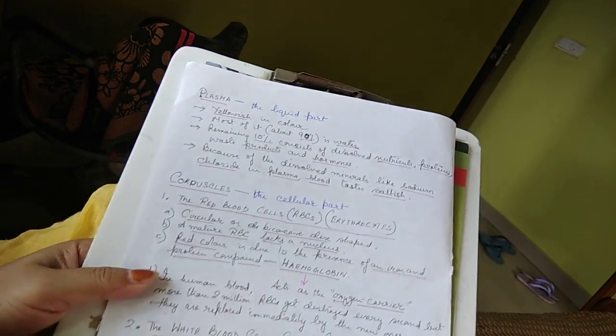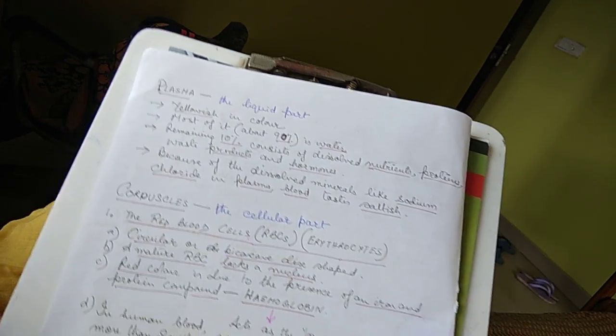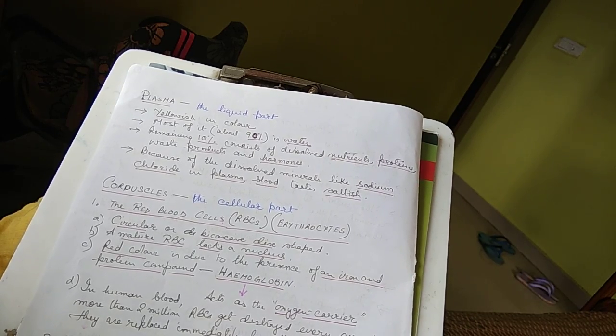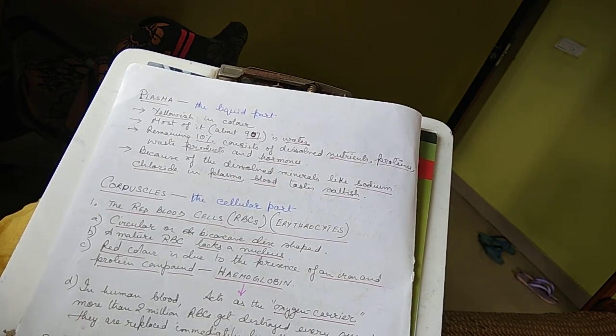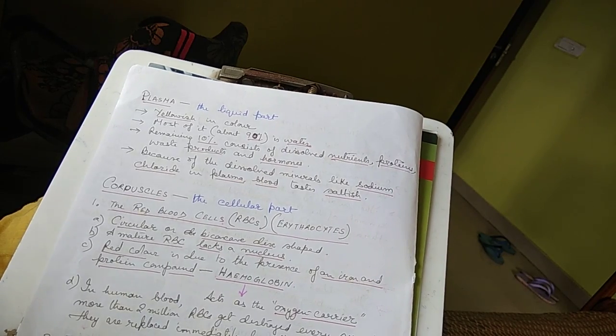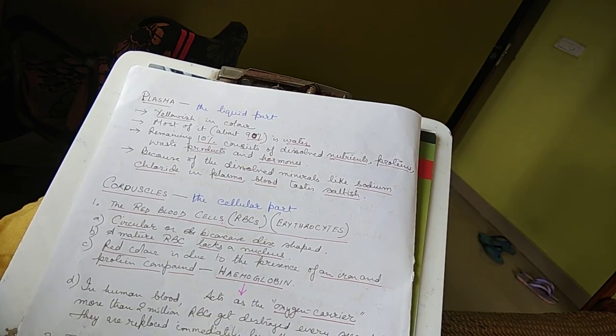Plasma, which is the liquid part, is yellowish in color and most of it, that is 90% of plasma is water. Remaining 10% consist of dissolved nutrients, proteins, waste products and hormones.